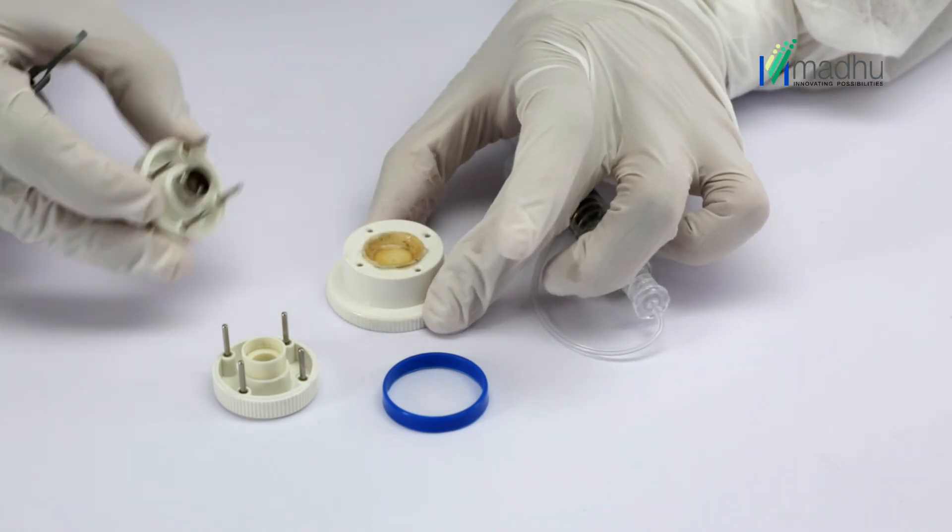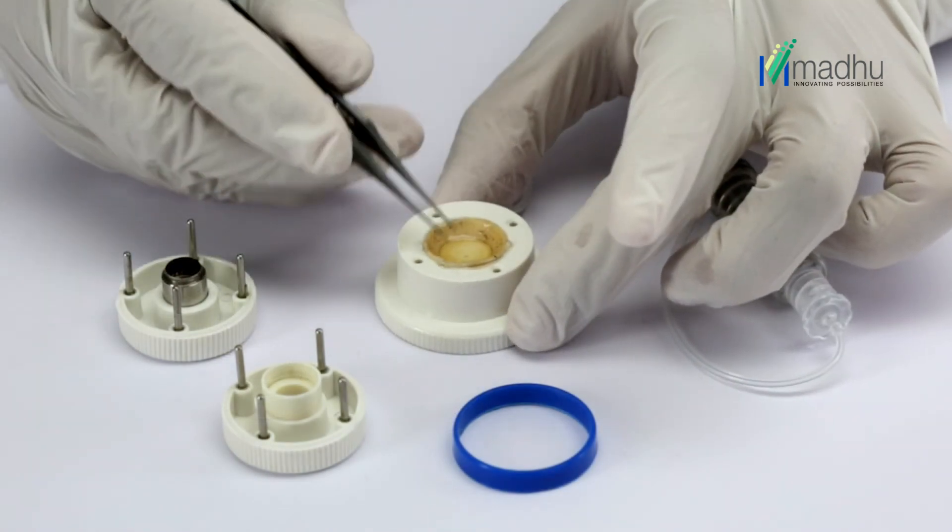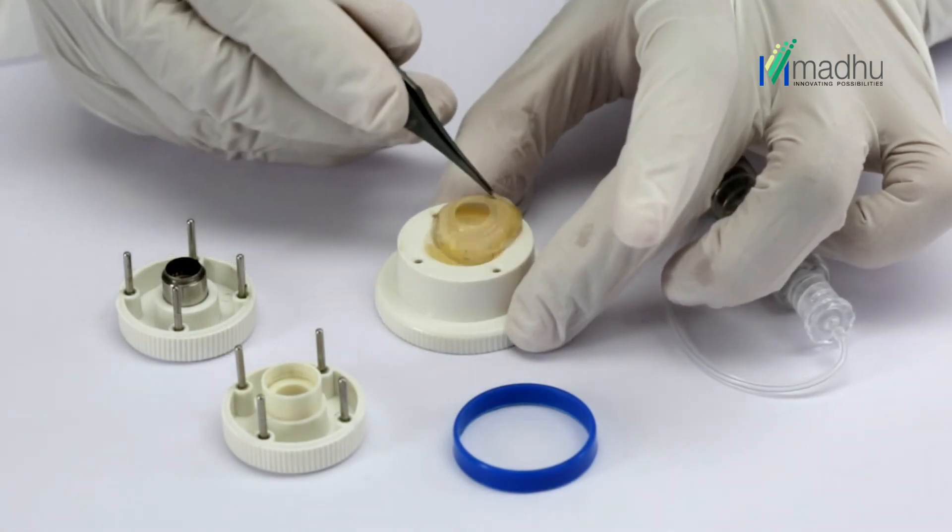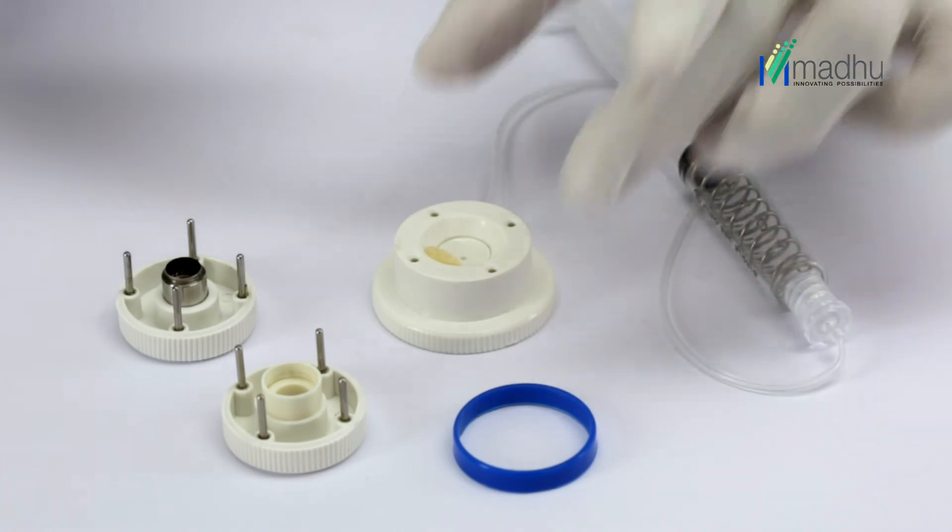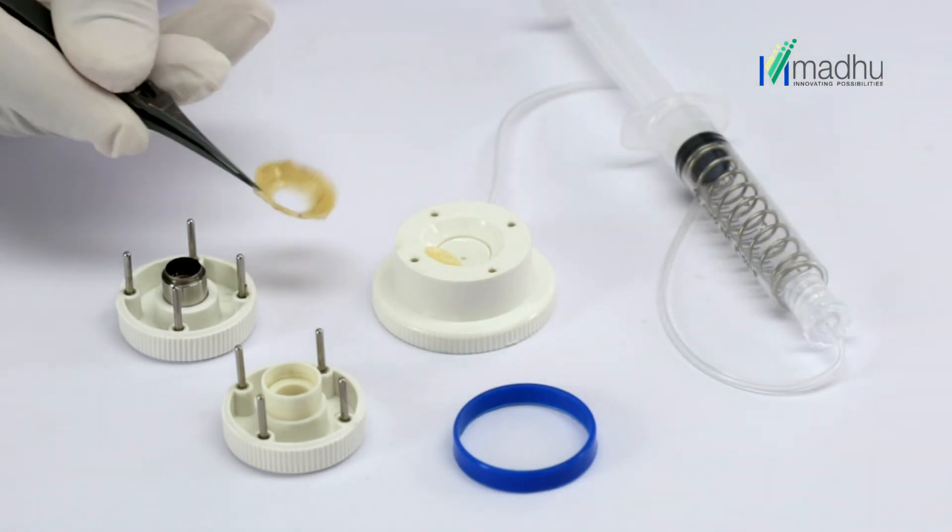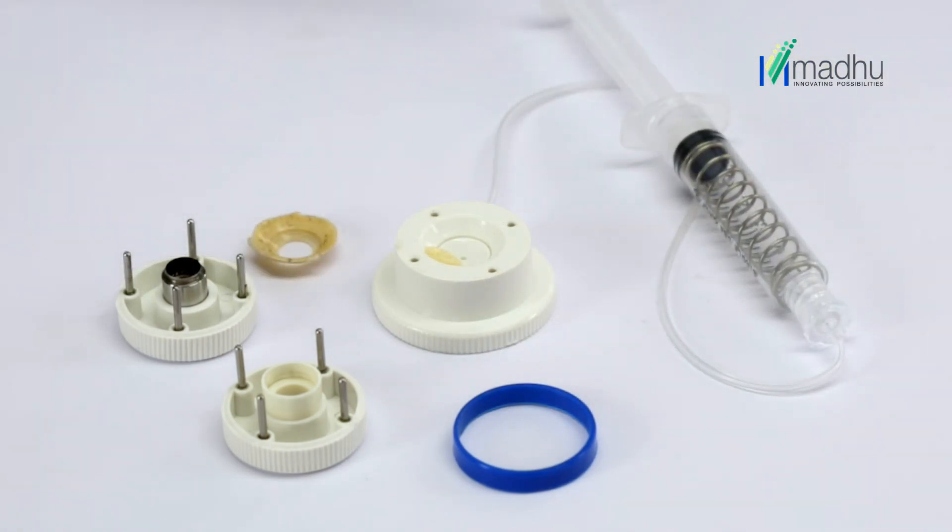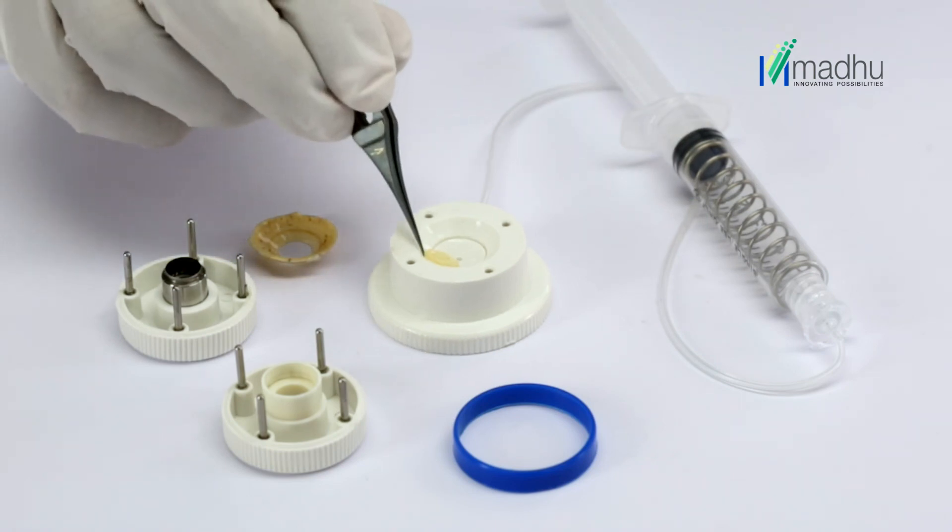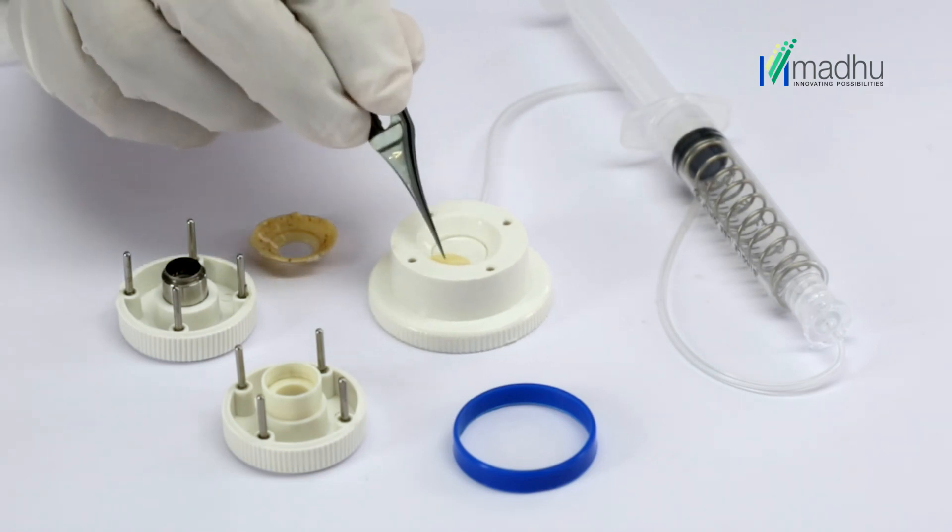Grasp the scleral rim with a fine-toothed forceps and remove the rim. This releases the vacuum and leaves the donor cornea button in the well of the cutting block base. A donor corneal button of the desired diameter is ready for use.